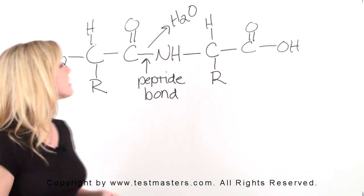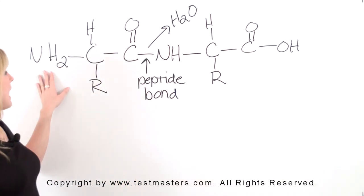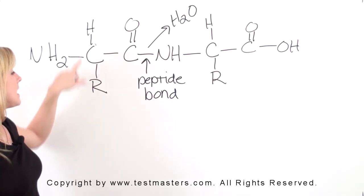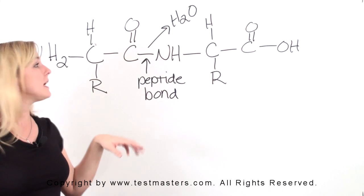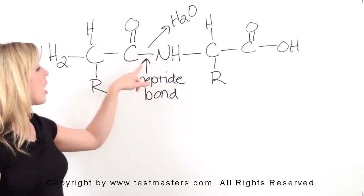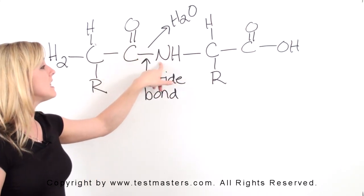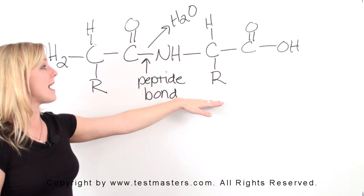Now a peptide bond looks like this. We've got the amino end of one of our amino acids, we have our C that has our R group attached, then here's where our carboxyl end would be, but you can see instead of there being an OH, we have it bonded to the amino group of the next amino acid.